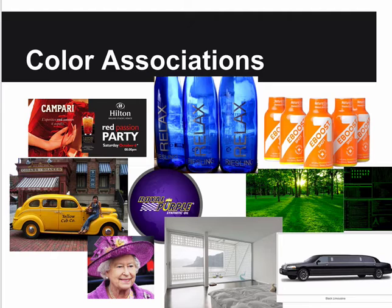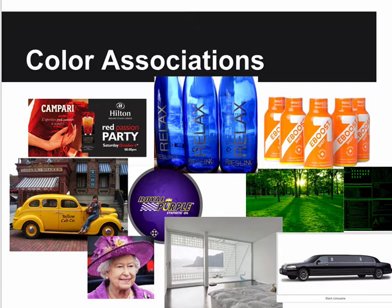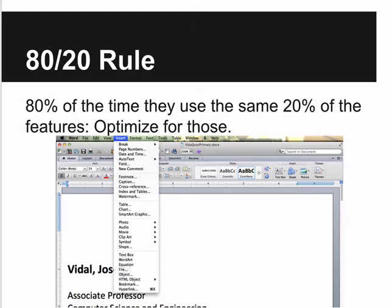There are color associations, and these are culture-dependent. In US culture: yellow means cabs, red means passion, blue is relaxing, orange gives you a boost, green is either nature or hacking depending on whether the background is black, black is luxury - black tuxedos, black limos - white is relaxing, and purple is royal, at least in the UK.